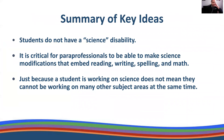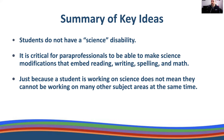A summary of key ideas: students do not have a science disability — it's probably related to ELA or math/numeracy. It's critical for paraprofessionals to be able to make science modifications that embed reading, writing, spelling, and math, and to be really good at embedding all those things into various types of curricula that may not be reading or math related. Just because a student is working on science does not mean they cannot be working on many other subject areas at the same time. It's important to know holistically what all the goals are that your student is working on in their IEP, and how you can embed as many of those goals as possible into your modifications and into what the student is learning daily.